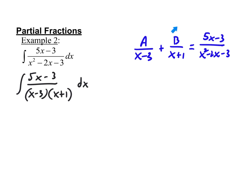When adding fractions we need a common denominator — this is both of those factors. In order to get a common denominator, I need to multiply by the missing factor. What factor is missing from x minus 3 that the overall denominator has? It's missing x plus 1, so I multiply top and bottom by x plus 1. What's missing from the other side? x minus 3. So I multiply top and bottom by x minus 3. We create an equivalent expression so that we can solve for A and B.